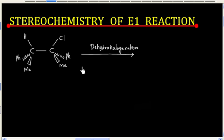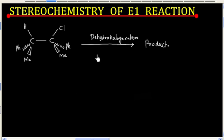Let us consider dehydrohalogenation of this molecule. What will be the product? And let us say this reaction follows E1 mechanism.